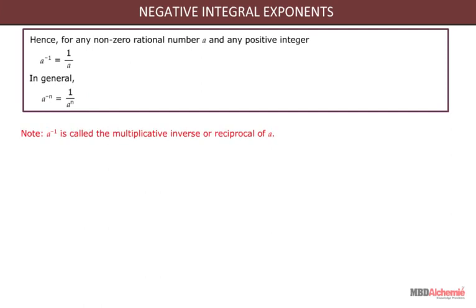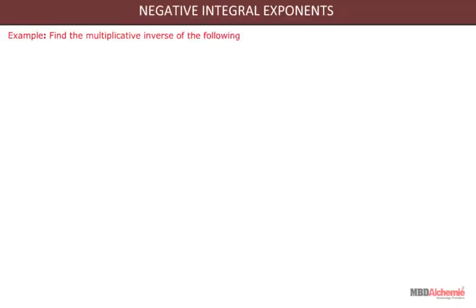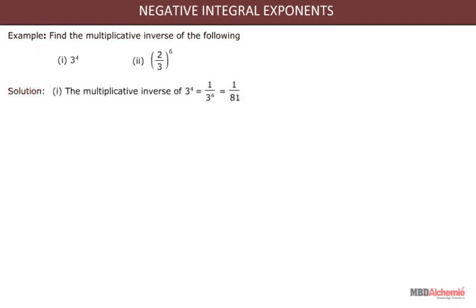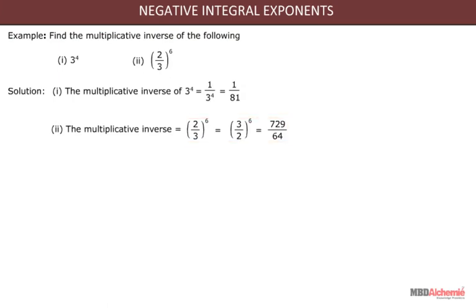Note: a to the power minus 1 is called the multiplicative inverse or reciprocal of a. Let us understand this concept with the help of these examples. The multiplicative inverse of 3 to the power 4 is 1 upon 81. The multiplicative inverse of 2 upon 3 to the power 6 is 729 upon 64.